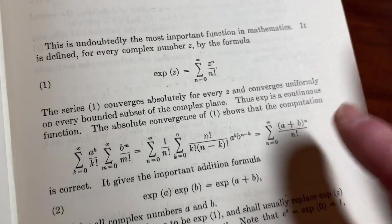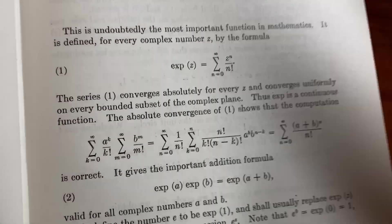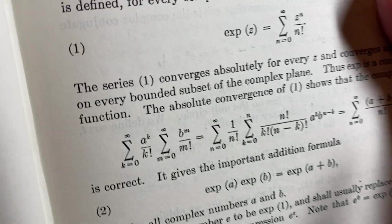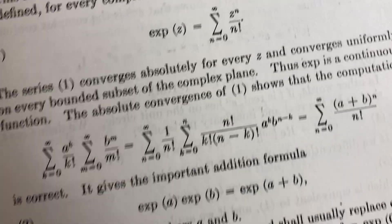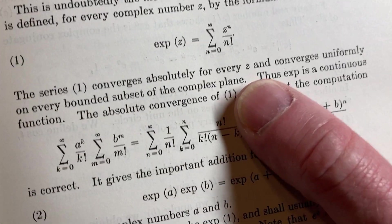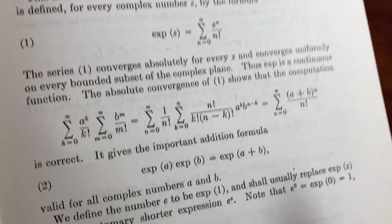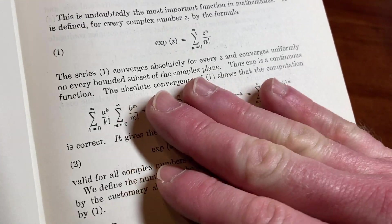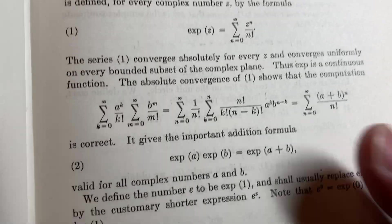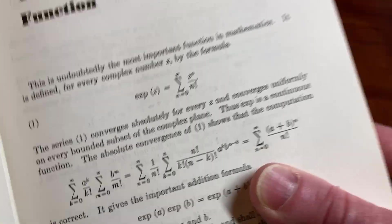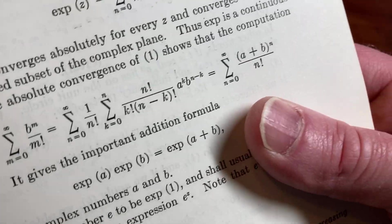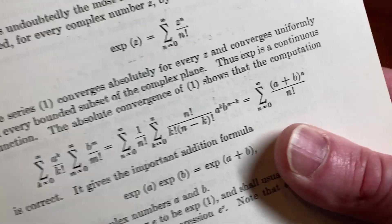It actually takes a lot to understand this. There's a lot of terminology. The series converges absolutely, so we've got to talk about that, and converges uniformly. What is that? On every bounded subset of the complex plane. So what is a bounded subset? You do have to know a lot of mathematics to read this book.